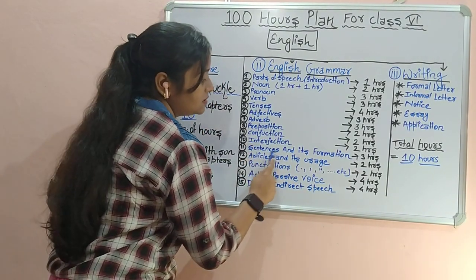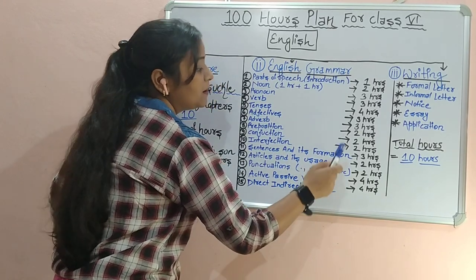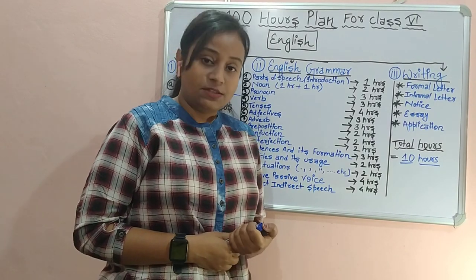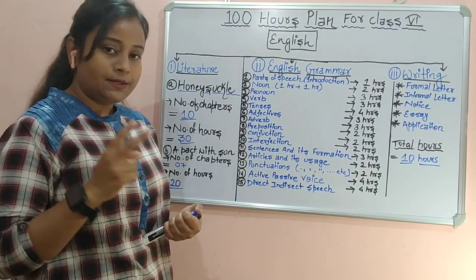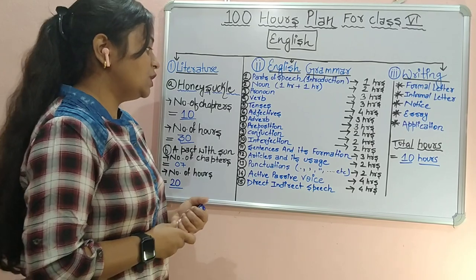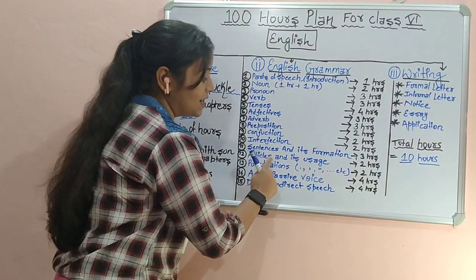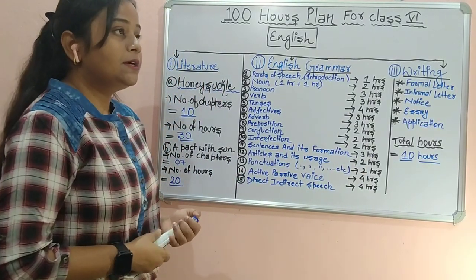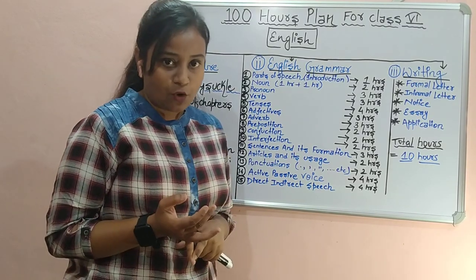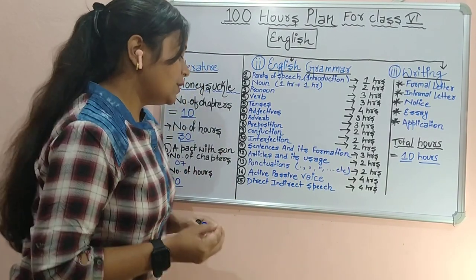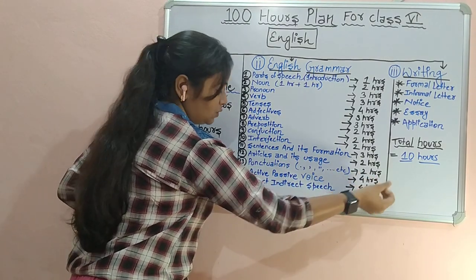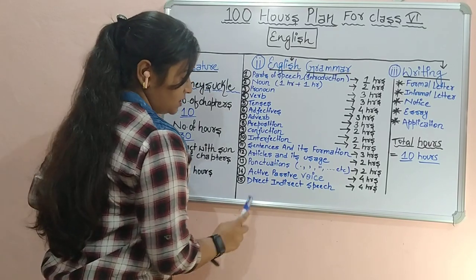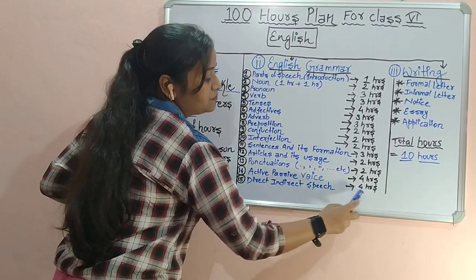Then we come to sentences and their formation, which will take three hours — in the first hour we will learn about sentence and its types, and the remaining two hours we will learn about its formation. Then article and its usage will take two hours. Then punctuation — comma, full stop, etc. — and its usage will take two hours. Active and passive voice will take four hours. And the last one is direct and indirect speech, which will take four hours.